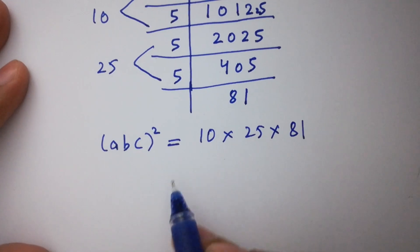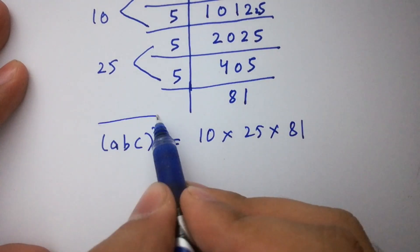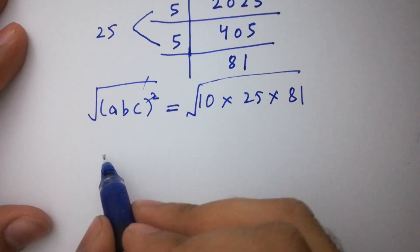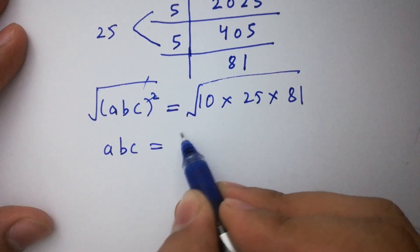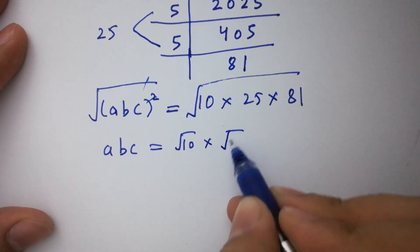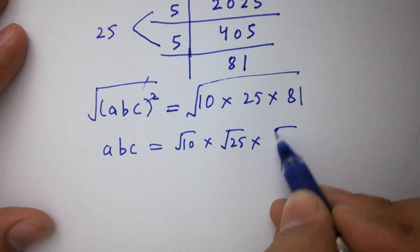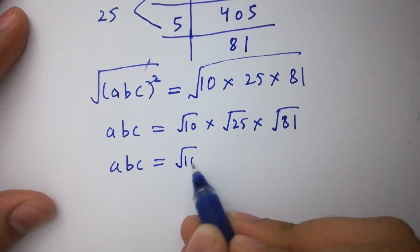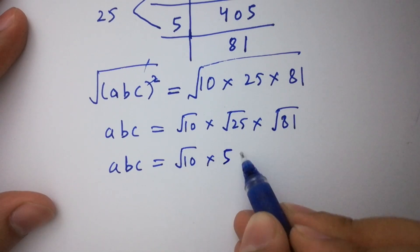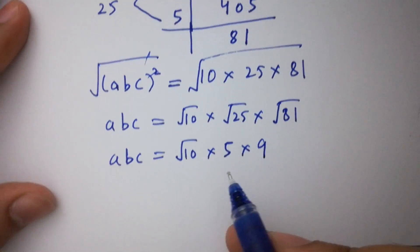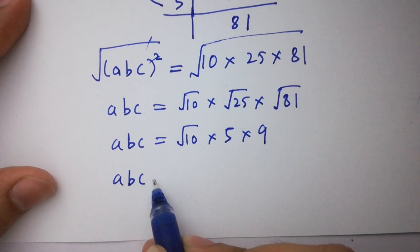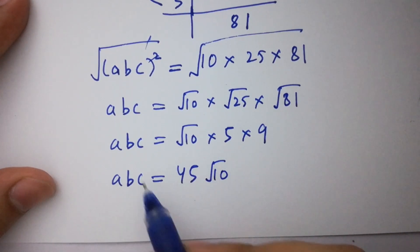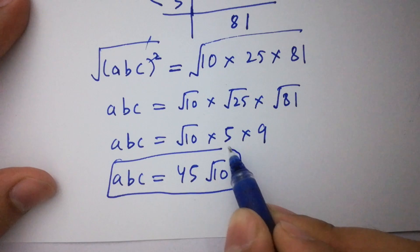To solve this, take the square root on both sides. The square cancels with the square root. We have abc equal to square root of 10 times square root of 25 times square root of 81. So abc equals square root of 81 is 9, times 5 is 45, giving abc equal to 45 square root of 10.